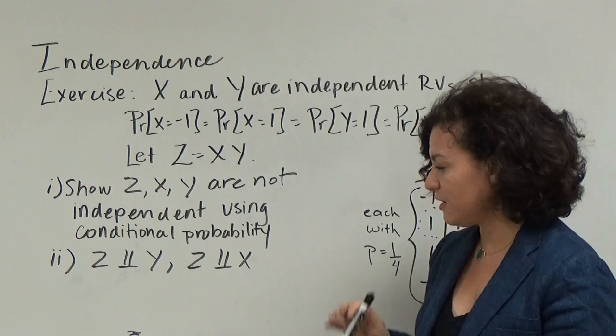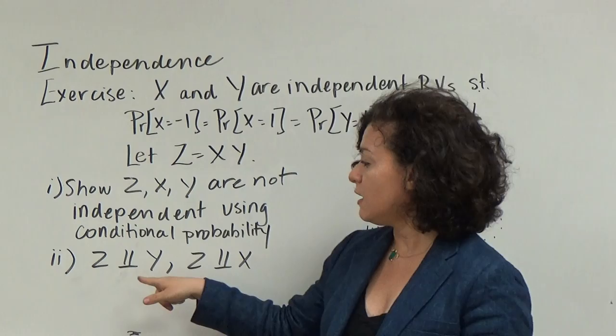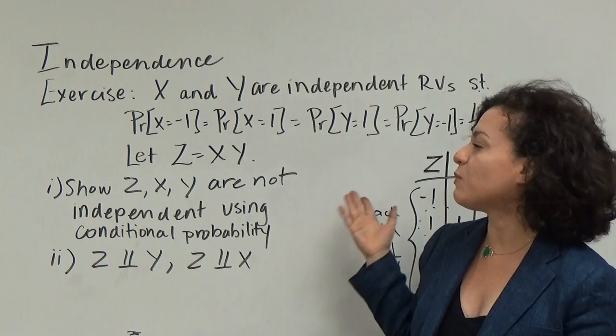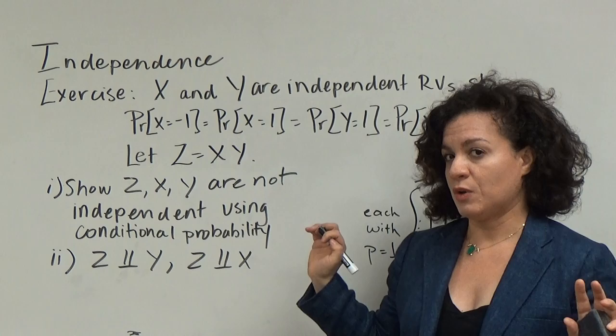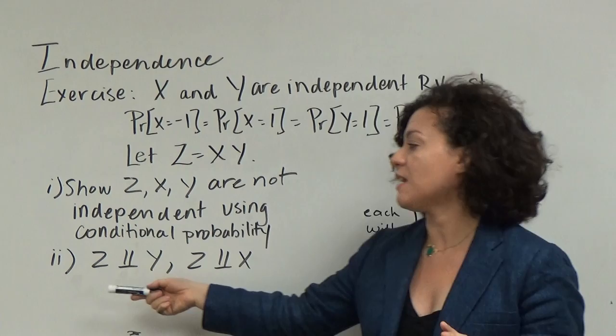The second thing we want to show is that z is independent of y and z is independent of x. We won't worry about x and y because we're told that they're independent. So essentially, we're showing that these random variables are pairwise independent — meaning independence for pairs of two variables, which corresponds to k-wise independence when k equals 2.